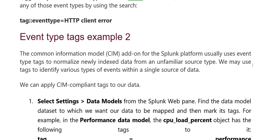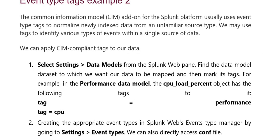Event types example two — Common Information Model (CIM): add the Splunk platform and usually use event type tags to normalize new indexed data from unfamiliar source types. We use tags to identify various types of events within a single source of data. We apply the CIM-compiled tag to our data. First, select Settings > Data Models in Splunk web, find the data model dataset, then map and mark the tags.